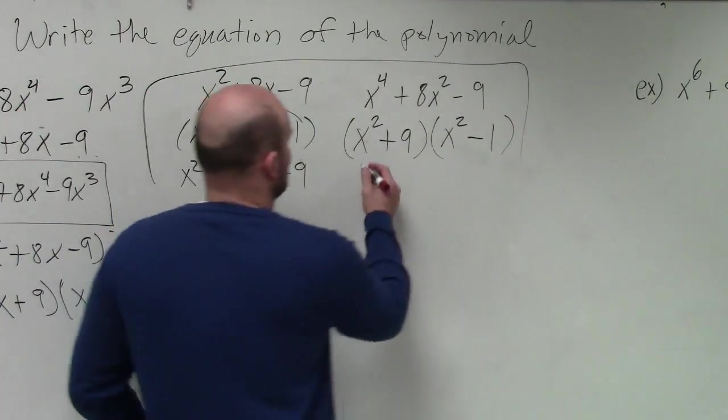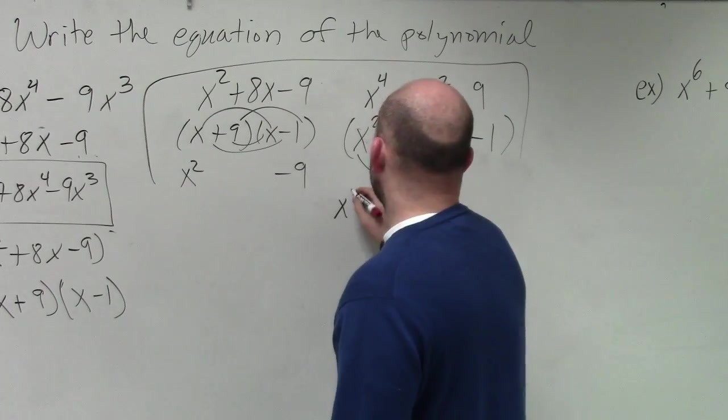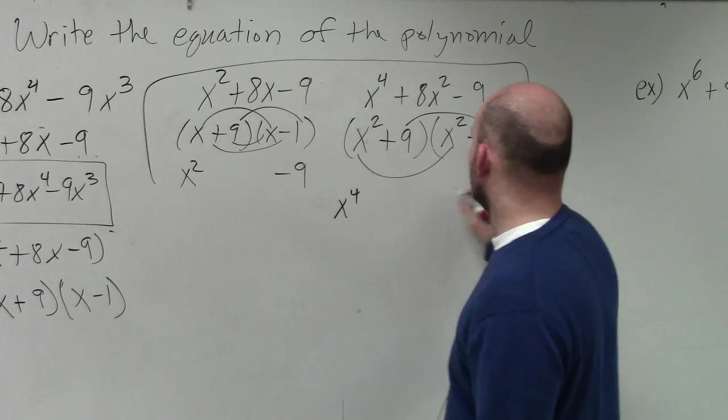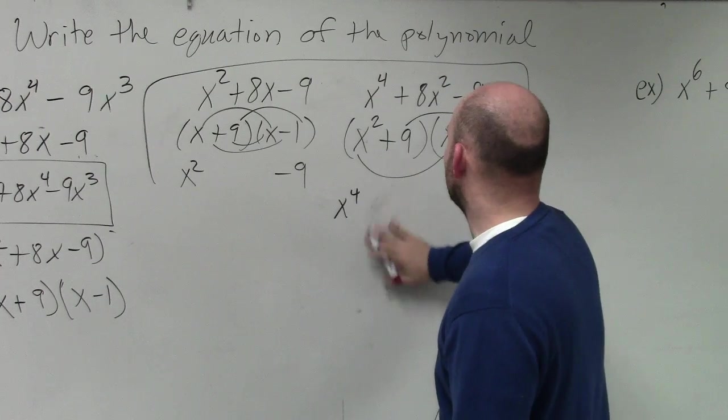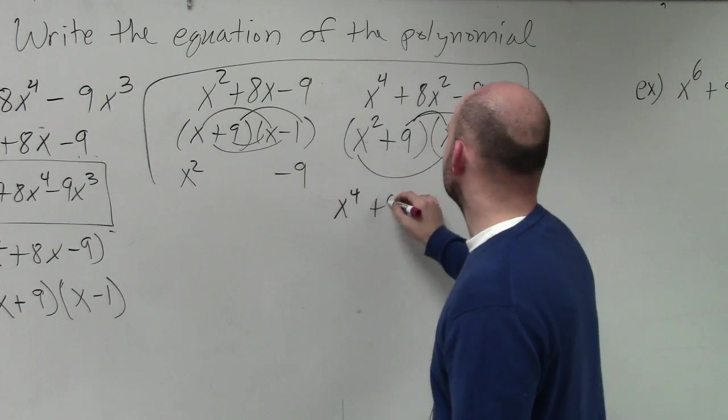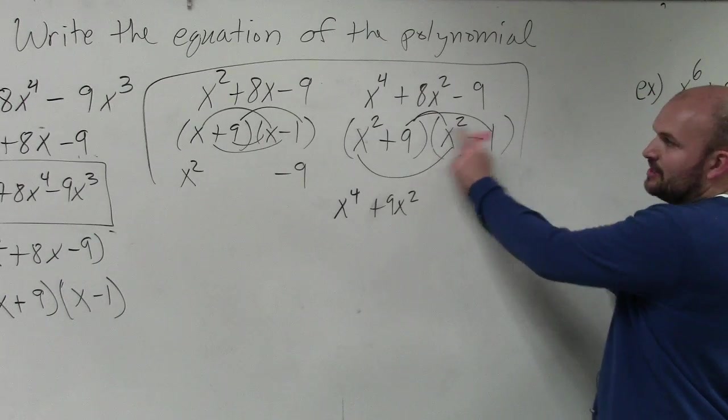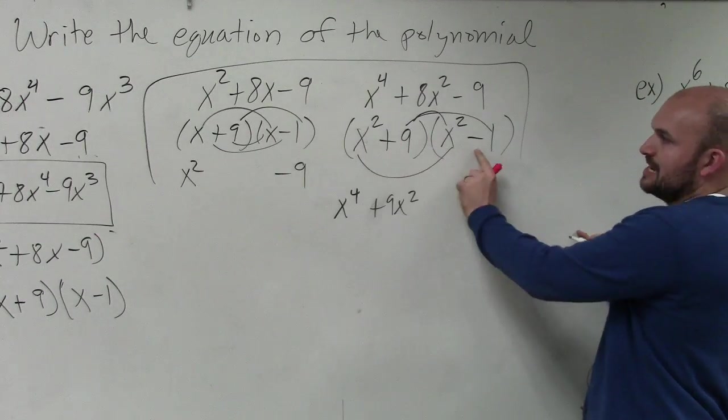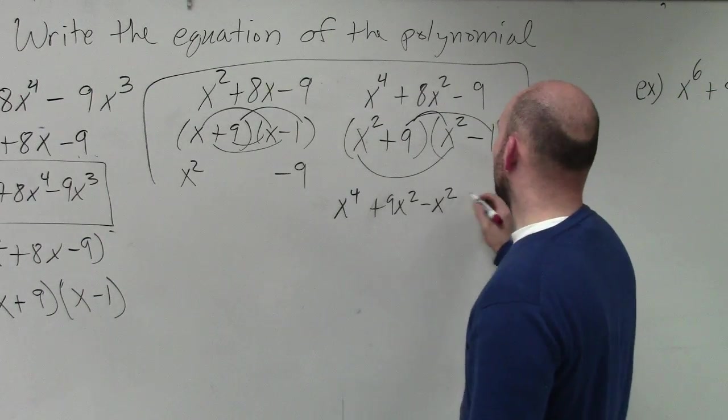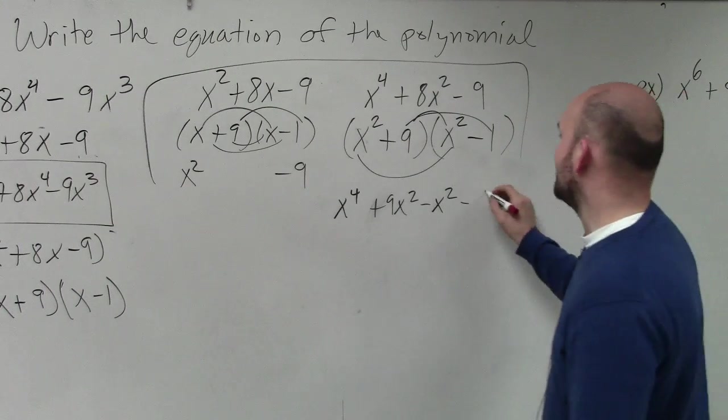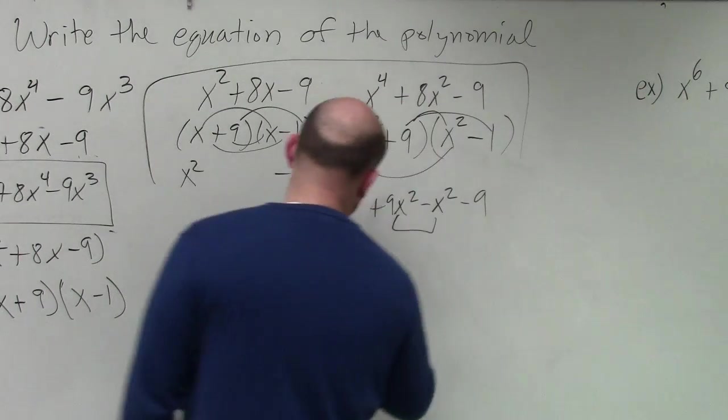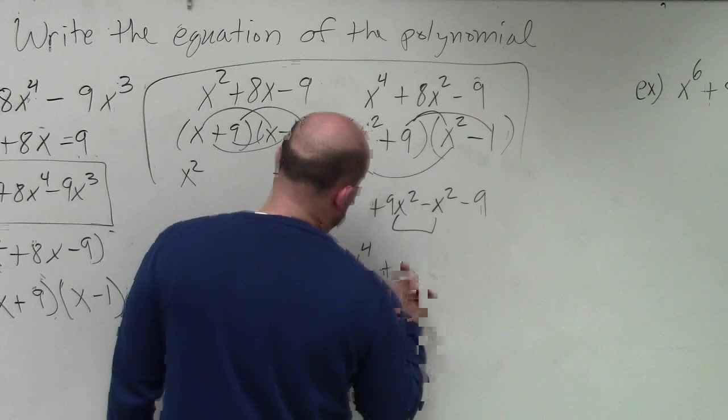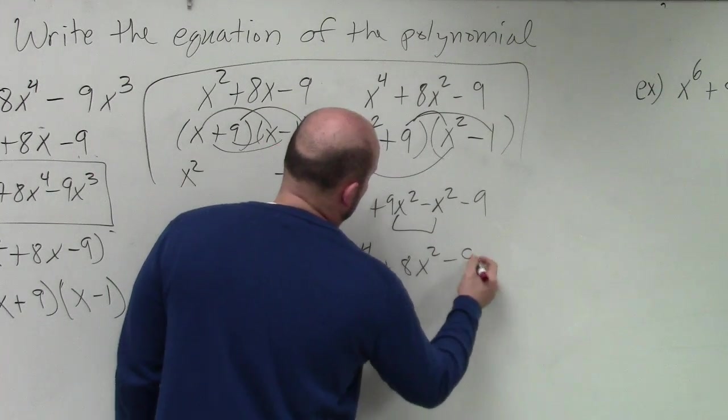Let's just actually, let's FOIL it. So I get x to the fourth. I get plus 9x squared. When I do 9 times x squared, I get 9x squared. When I do x squared times negative 1, I get negative x squared. And then 9 times negative 1, I get negative 9. I combine my middle terms. I get x to the fourth plus 8x squared minus 9.